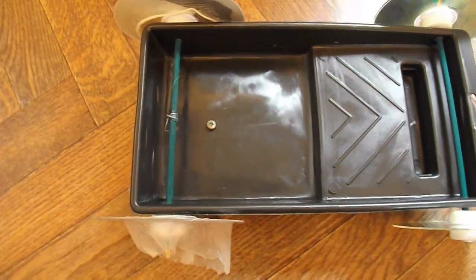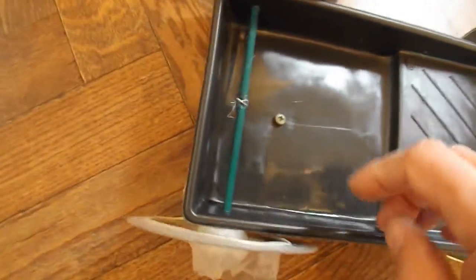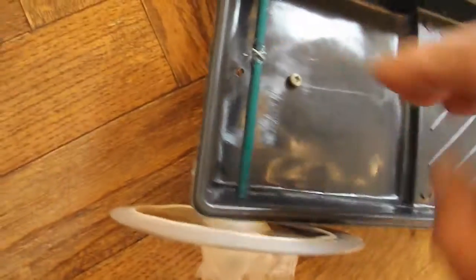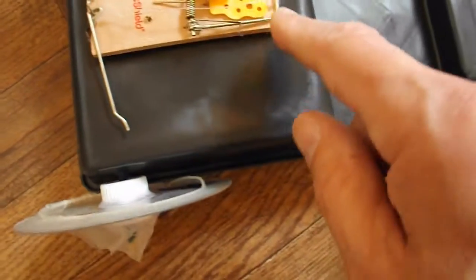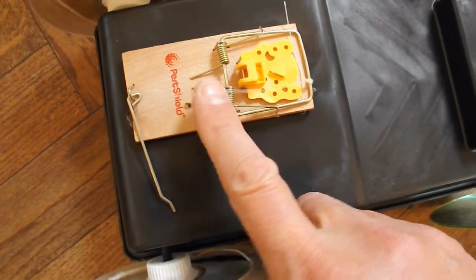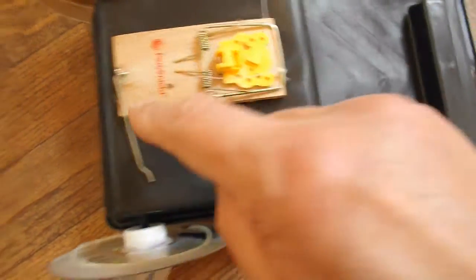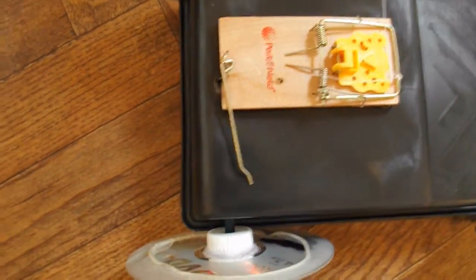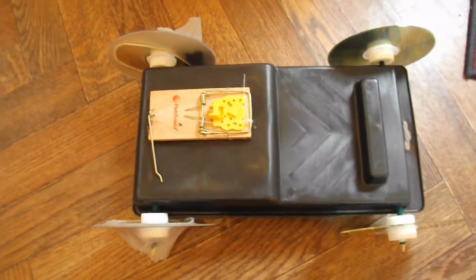And that worked. And to convert it to a mousetrap car. Drilled a hole through. Just there. Mounted the mousetrap on top. Got a little bit of fishing line there. Attached to the arm which disappears down through the hole and is attached to the back axle. So there we go. Two cars for the price of one.